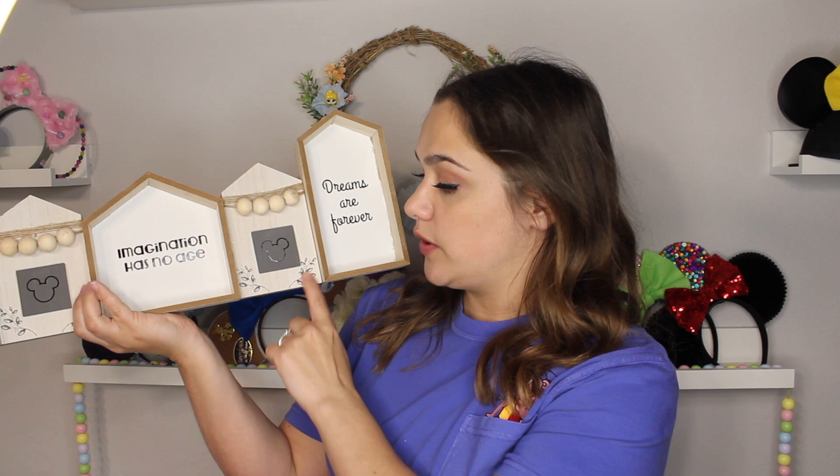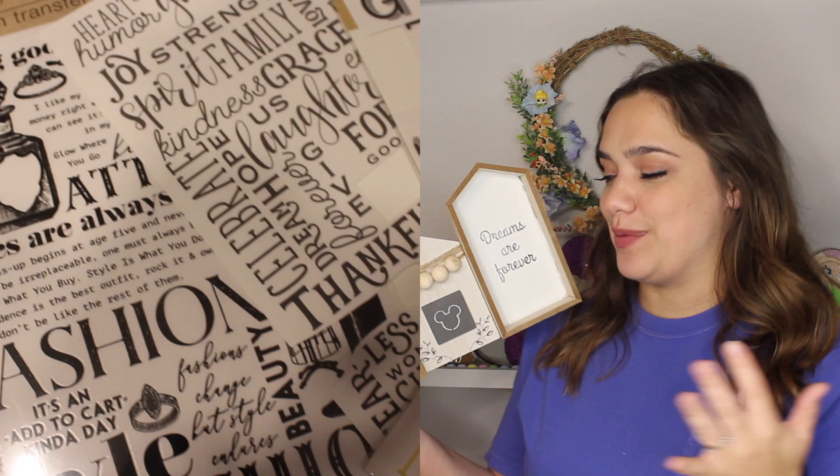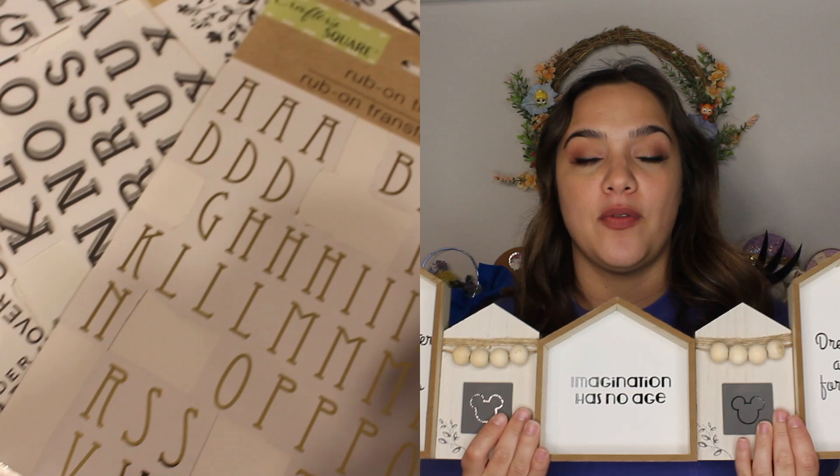Then, I added these little rub-on transfers for this leaf design. These rub-on transfers are amazing. And Dollar Tree has a bunch of different options of them now. They are very cool. They're not vinyl. But basically, it's like a sticker. You press it down, you rub it with your finger, and when you peel the tape back, it just attaches to what you put it on. It is a rub-on transfer. It transfers onto where it is rubbed. It's really cool, though, and they have a bunch of different options. So, I just liked the little detail that that added to the bottom.